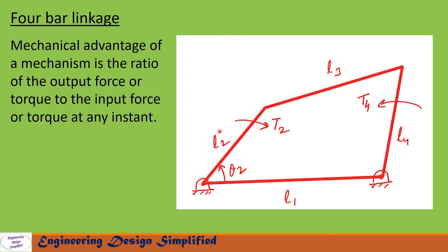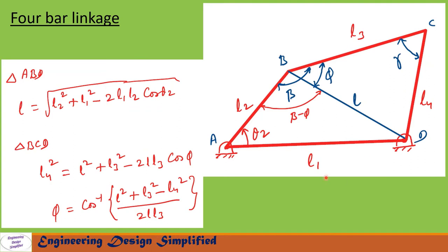In the coming slides, let us see how to derive the equation. In this picture, shown is a typical four-bar linkage. Link AD is the fixed link with length l1, link AB is the crank with length l2, BC is the coupler with length l3, and CD is the follower with length l4. The angle between the fixed link and the crank is theta 2. Now let us draw a line from B to D — let us say that length is l — and the angle here is gamma, and the angle here is phi.